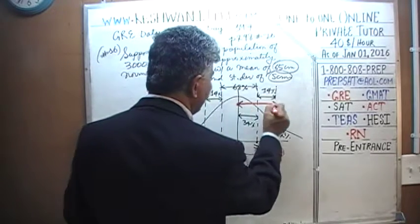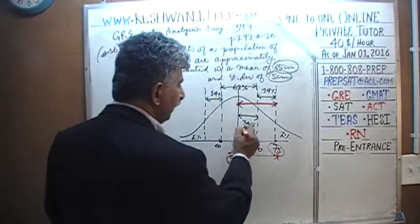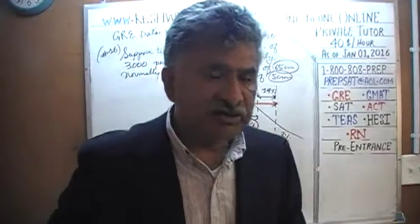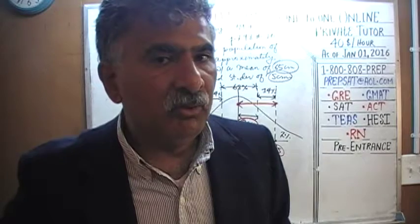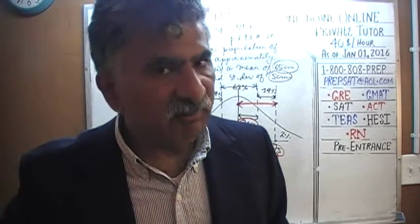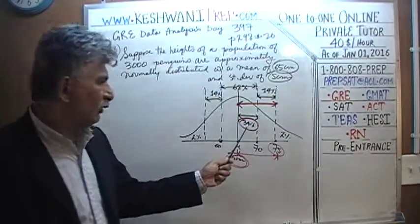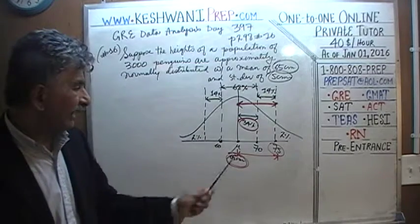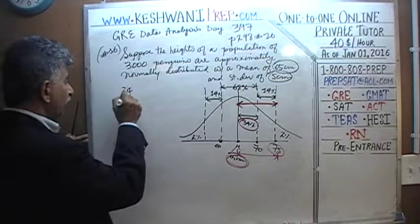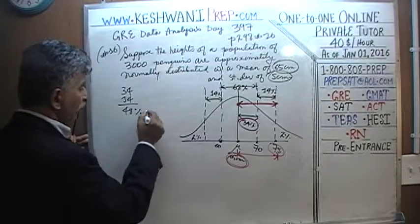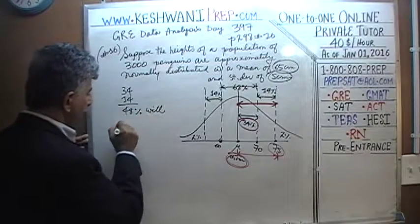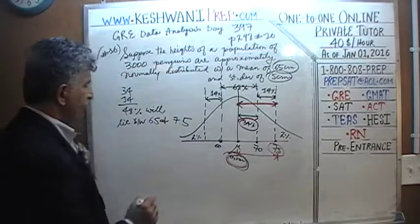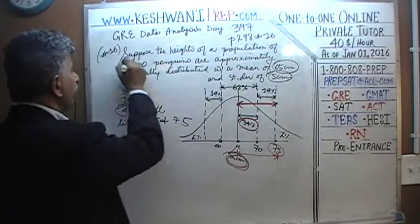From 65 to 75, approximately 34% of penguins fall between 65 and 70 (the mean to one SD above), and 14% fall between 70 and 75 (one to two SDs above the mean). Therefore 34 + 14 = 48% of the penguins will have a height between 65 and 75 centimeters. All we have to do is find 48% of 3,000.